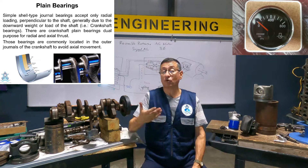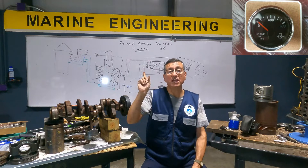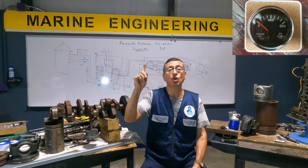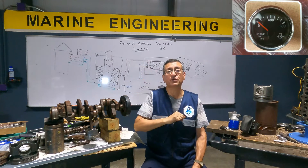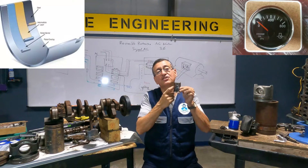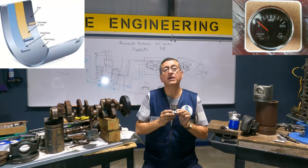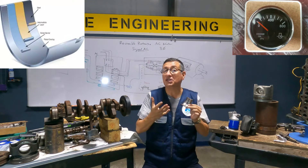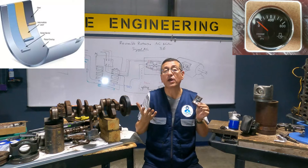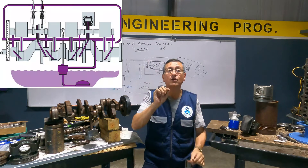This is the pressure that you have in the oil pressure gauge. Of course, if the oil pressure decreases, if the needle of the oil pressure shows low oil pressure, this is an indication that the soft metal in the plain bearings is gone or is worn.